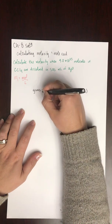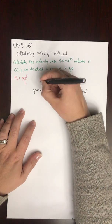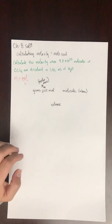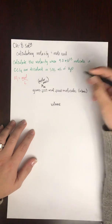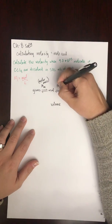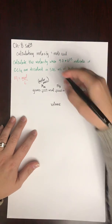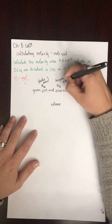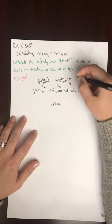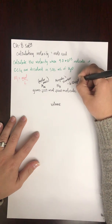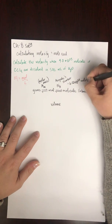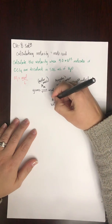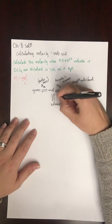On the mole road, we can go between grams and moles using molar mass — the sum of atomic masses from the periodic table. We can go between moles and molecules (or atoms) using Avogadro's number, abbreviated Nₐ, which is 6.02 times 10 to the 23rd molecules per mole. We can also go between volume and moles using molarity.